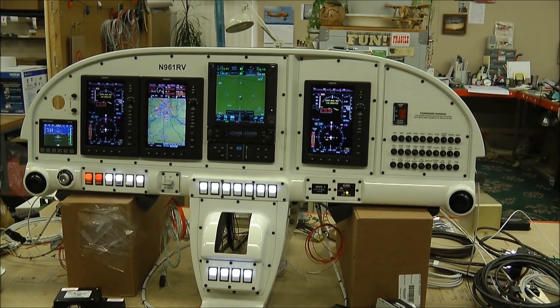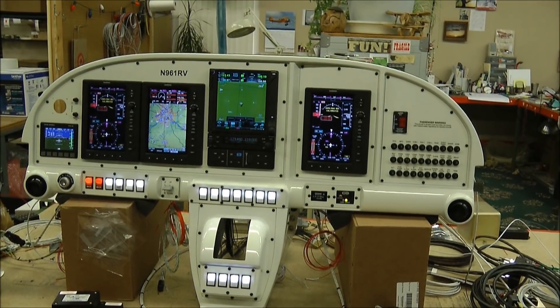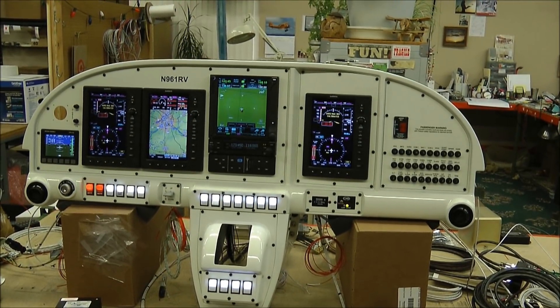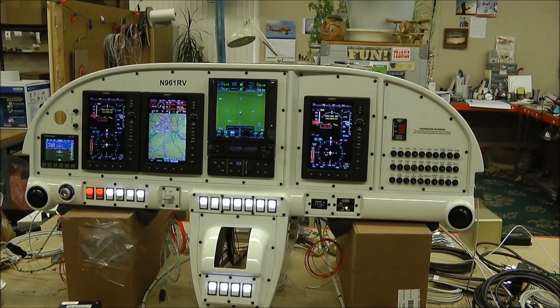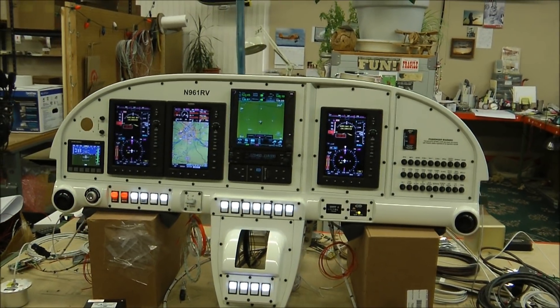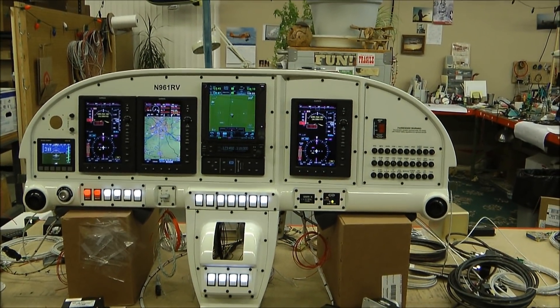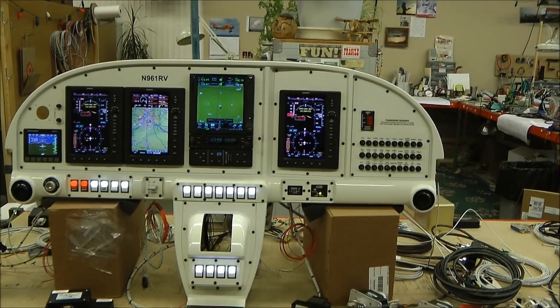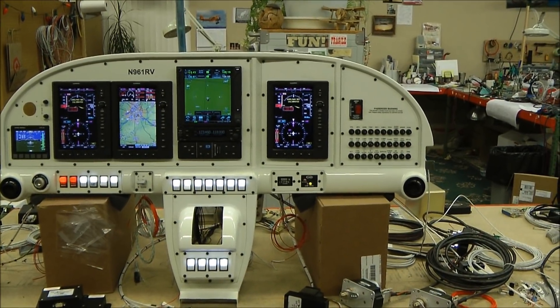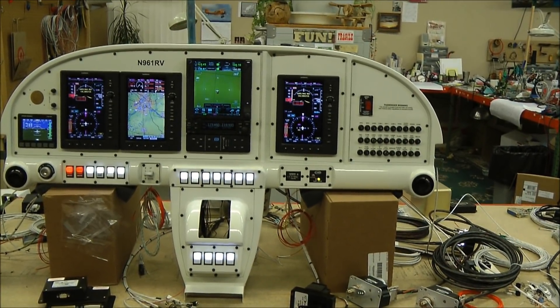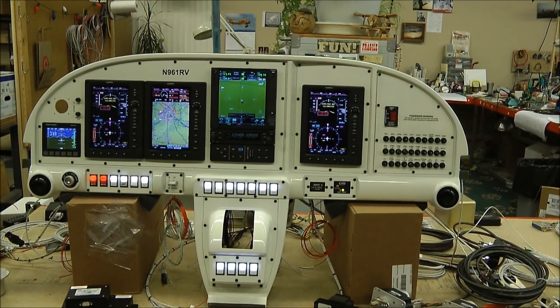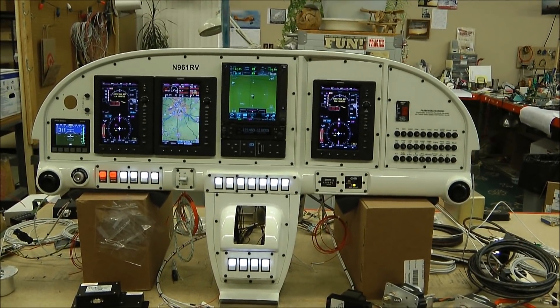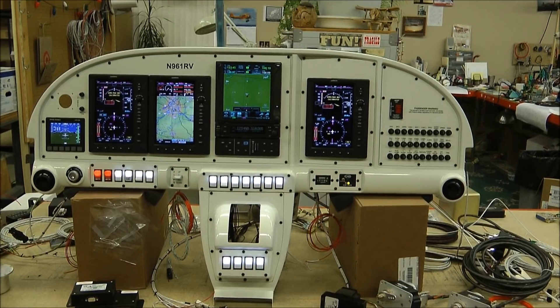They're trying to understand the system. They don't understand what a GDU is, an Adahars, a compass, a remote magnetometer, and what all these things are. So we've got this panel almost done here. I thought we'd take a look at it and I'll tell you what a few of the components are. This is just a basic 101 of what various components are.